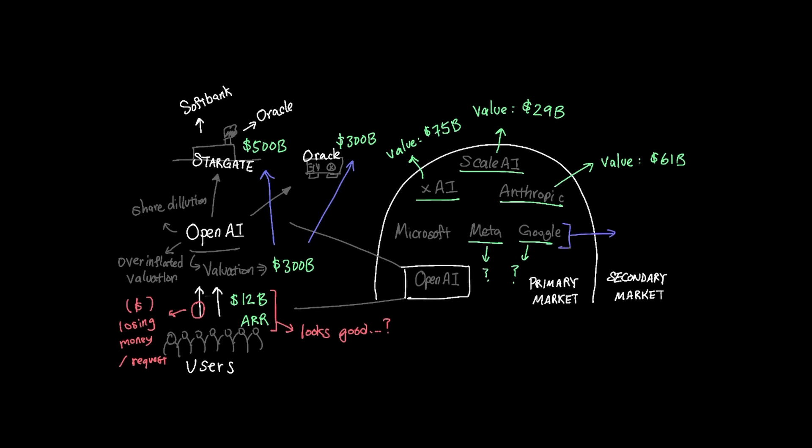Anthropic is valued at $61 billion with $5 billion ARR. Meta and Google are a bit harder to estimate since they are not primarily an AI company, but rather part of a trillion dollar companies that invest tens of billions of dollars annually to compete in the primary market.